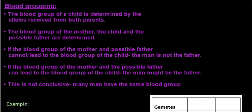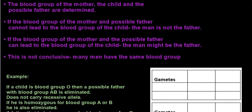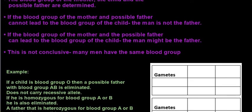The blood group of a child is determined by the alleles received from both parents. If a child is blood group AB, for example, the child would have received one allele from one parent and the other allele from the other parent. So the blood group of the mother, the child, and the possible father are determined. If the blood group of the mother and the possible father cannot lead to the blood group of the child, the man is not the father.